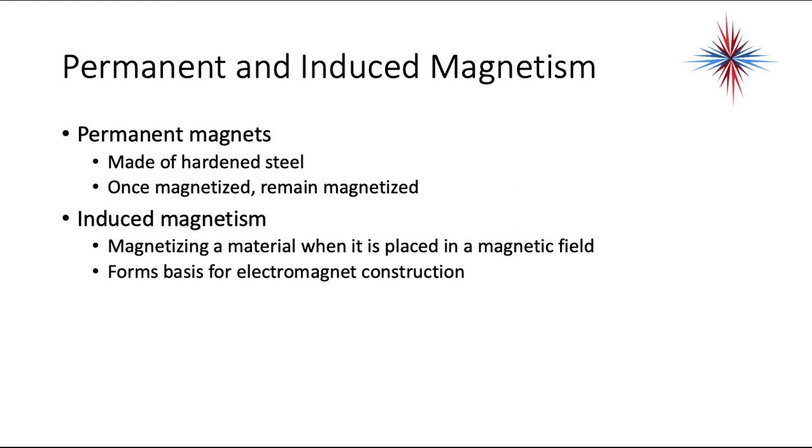We have two types of magnetism: permanent magnetism and induced magnetism. Permanent magnets are made of hardened steel. Once magnetized, they remain magnetized. Induced magnetism is when you're magnetizing a material when it's placed in a magnetic field. It forms the basis for electromagnetic construction.